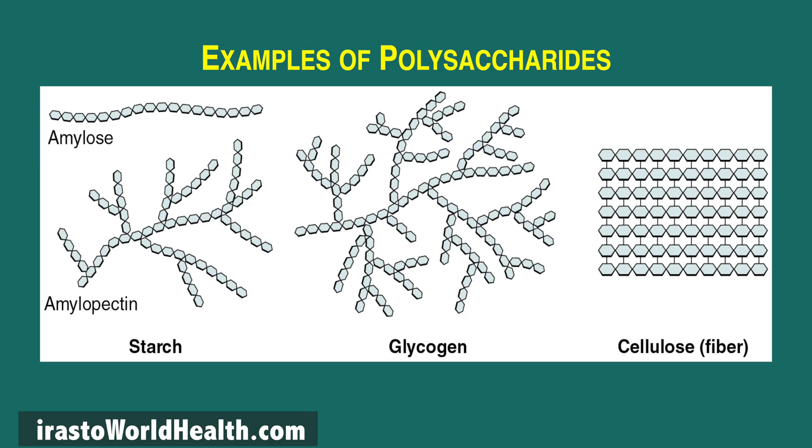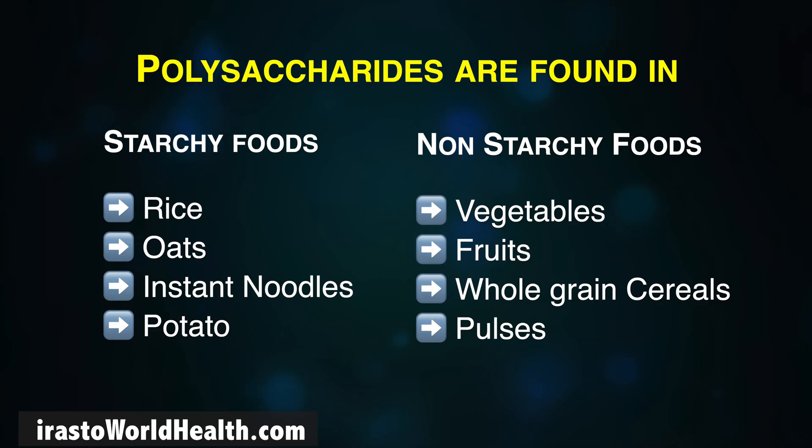Oligosaccharides are made up of three to nine monosaccharide units, whereas polysaccharides are made up of ten or more monosaccharide units held together. Examples are starch, glycogen and cellulose. These are a few examples of polysaccharides which we consume every day.